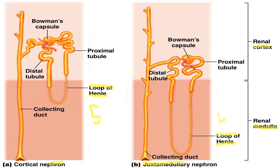If there is an excess amount of water present in your body, the loop of Henle will reabsorb it and push it back into your blood vessels. The cortical nephron has a short loop of Henle, so it reabsorbs less water. The juxtamedullary nephron has a long loop of Henle, so it absorbs a high amount of water, resulting in the production of concentrated urine. The main function of the cortical nephron is production of diluted urine.